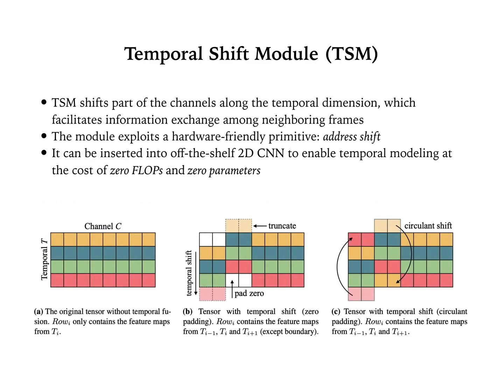This is our proposed temporal shift module, also called TSM. TSM shifts part of the channels along the temporal dimension, which facilitates information exchange among neighboring frames. The module exploits a hardware-friendly primitive — a dry shift. It can be inserted into off-the-shelf 2D CNNs to enable temporal modeling at the cost of zero flops and zero parameters.